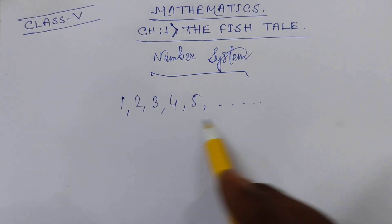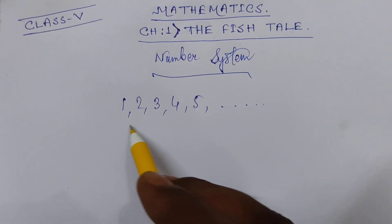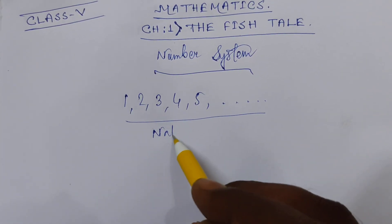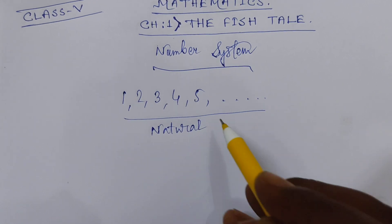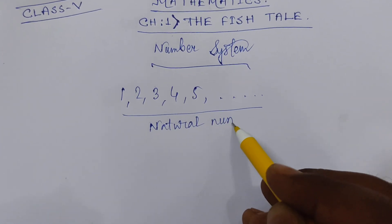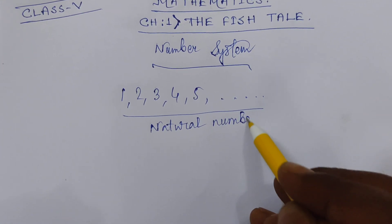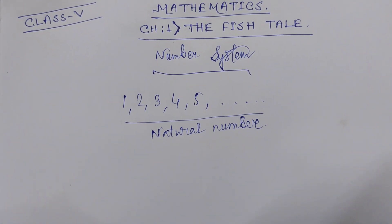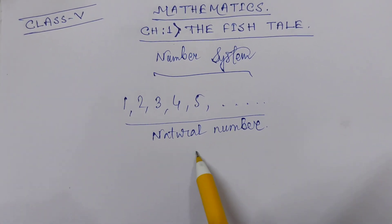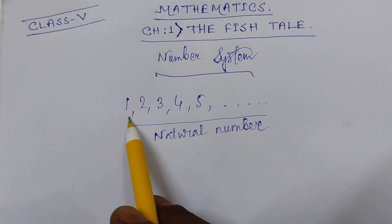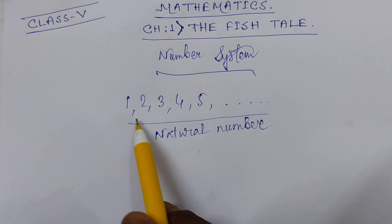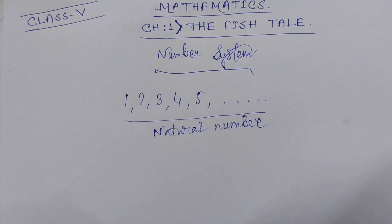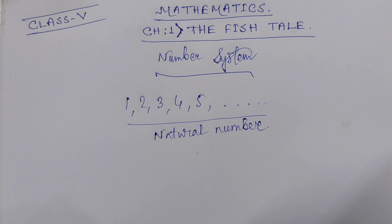These numbers are also called natural numbers. Natural numbers start from 1 and go up to infinite: 1, 2, 3, 4, 5... up to infinite.